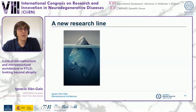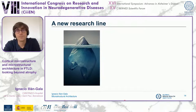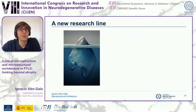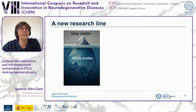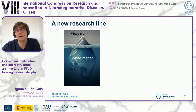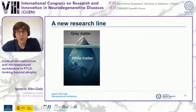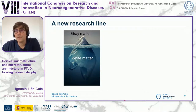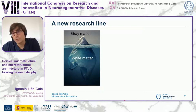To introduce this new biomarker, I would like you to think about an iceberg. Until now, we've been looking only at the little mountain of ice above the surface, ignoring what's beneath — the subcortical white matter. We know that some neurodegenerative dementias affect not only the cortex but also subcortical white matter. However, we don't have imaging biomarkers relating what we have above the surface to what we have below.